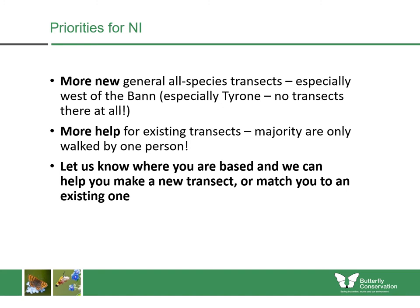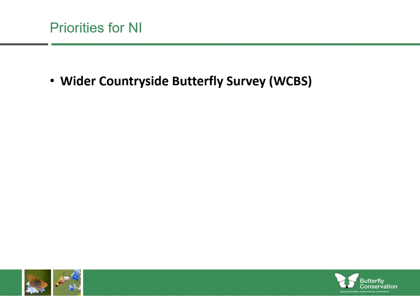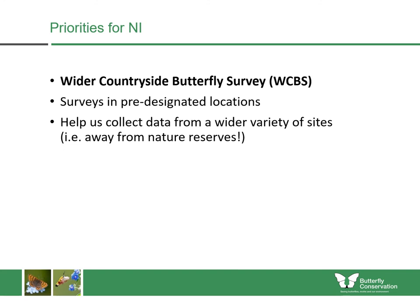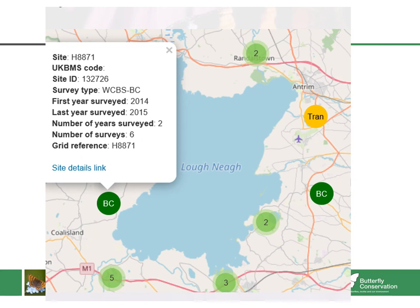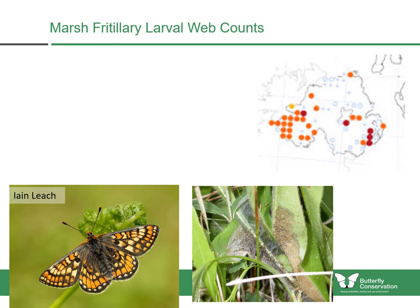Looking at the Wider Countryside Butterfly Survey, these surveys are in pre-designated locations and help collect data from a wider variety of site types, especially away from nature reserves. Only two to four surveys are needed per year, with the core period in July and August and optional surveys in springtime. You can find them on our website via the BC options — they tend to have a site code rather than a site name and are labeled WCBS. This one was last surveyed in 2015 and needs new people to help.